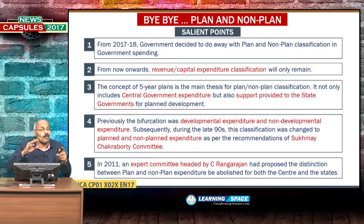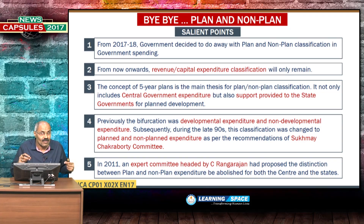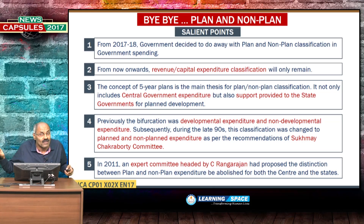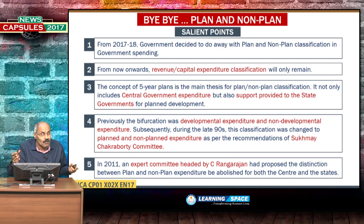This plan non-plan classification exists because of our 5-year plans. 5-year plans were started, and this is the last 5-year plan — please do not forget. This is the last 5-year plan and it is going to end on March 31, 2017. Subsequently, there will be no more 5-year plans, and this classification of plan non-plan emanated from the concept of 5-year plans.